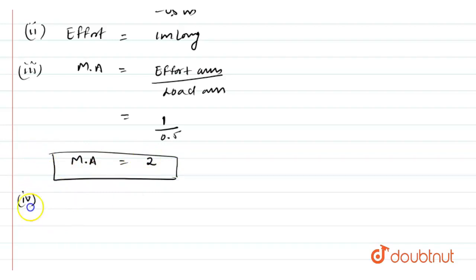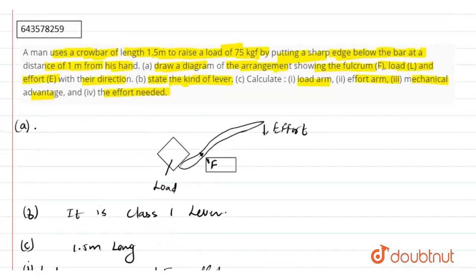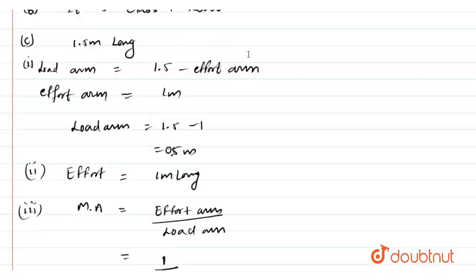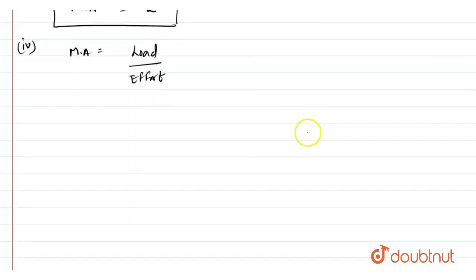In fourth part we have to calculate the effort. As we also know mechanical advantage is the ratio of load to effort. In question it is given that we have to apply a load of 75 kgf. Our effort will be equals to load divided by mechanical advantage. Load is 75 kgf and the mechanical advantage is 2.